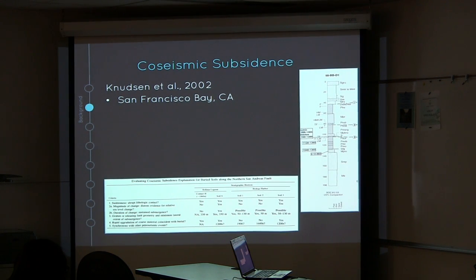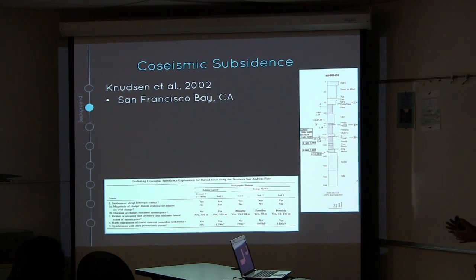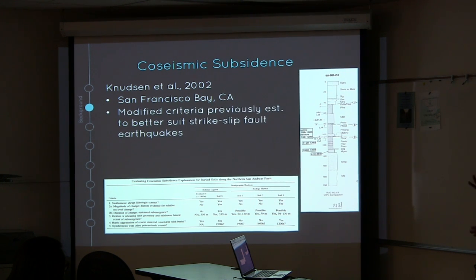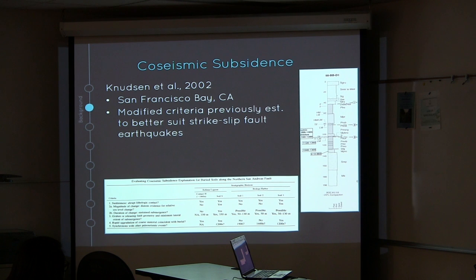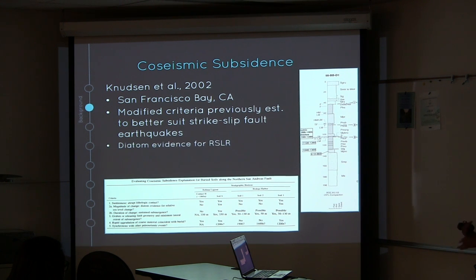Deformation on strike-slip faults should be a little different than subsidence in the Cascadia subduction zones. However, we do see co-seismic subsidence in strike-slip settings. Newton et al. did a study in San Francisco Bay and modified the criteria previously set by Nelson to better suit strike-slip fault earthquakes. For strike-slip faults, they felt that diatom evidence for relative sea level rise and rapid aggradation of coarse materials are better suited indicators, rather than tsunami deposits.